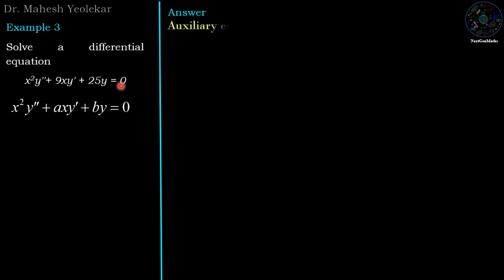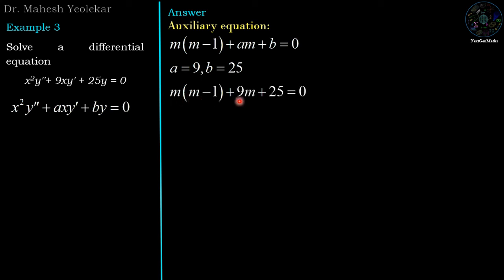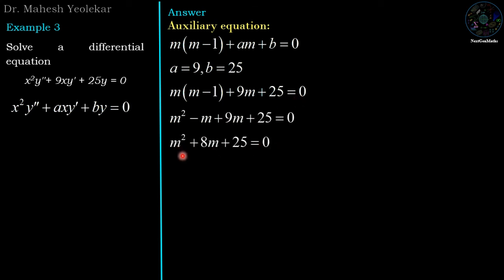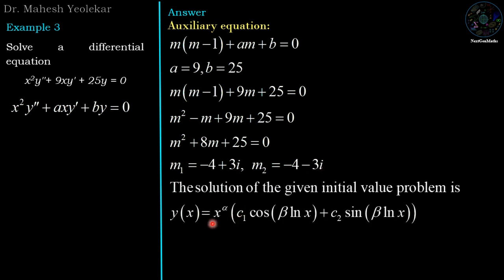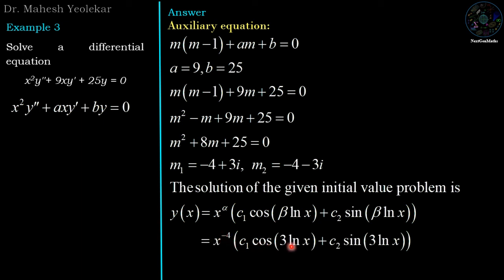Example 3: x squared y double dash plus 9xy dash plus 25y equal to zero. We generate the auxiliary equation with a equal to 9 and b equal to 25. The auxiliary equation is m(m minus 1) plus 9m plus 25 equal to zero, which simplifies to m squared plus 8m plus 25 equal to zero. Solving this quadratic gives complex roots m1 equal to minus 4 plus 3i and m2 equal to minus 4 minus 3i. The roots are complex conjugates, so the solution is of the form x power alpha times (c1 cos(beta ln x) plus c2 sin(beta ln x)), where the real part alpha equal to minus 4 and the imaginary part beta equal to 3. Therefore the solution is y equal to x power minus 4 times (c1 cos(3 ln x) plus c2 sin(3 ln x)).